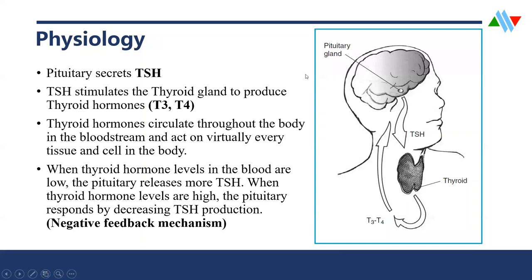In normal physiology, TSH, which is thyroid-stimulating hormone, is produced from the anterior pituitary, and then it goes to the thyroid gland and stimulates it to produce the thyroid hormones — T3, T4, and even calcitonin. When T3 and T4 are released into the blood and their levels are higher than needed, a negative feedback mechanism tells the thyroid gland to stop producing more T3 and T4, and also tells the pituitary to reduce production of TSH. This negative feedback mechanism is quite important in regulating the amount of T3 and T4 in blood.